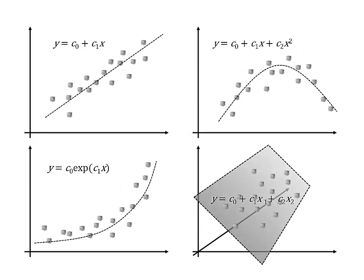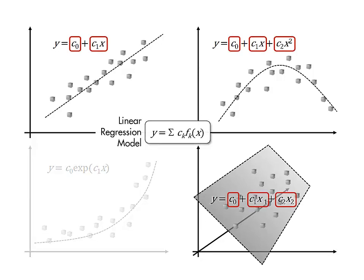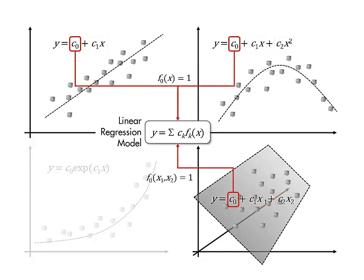There are infinitely many possible parametric regression models you could propose. An important class of models is linear regression models, which includes any model that is a sum of terms where each term is a function of the predictor variables multiplied by one of the parameters.